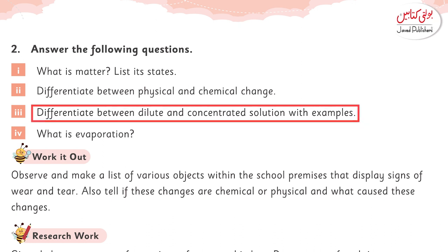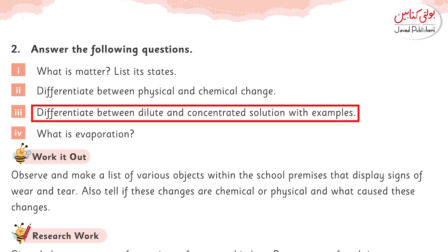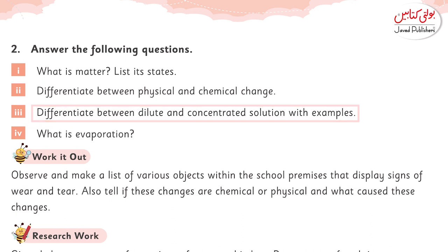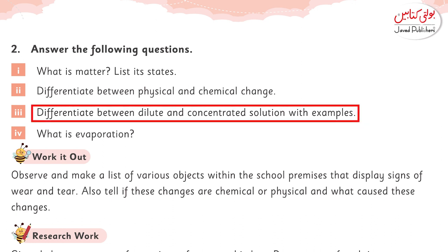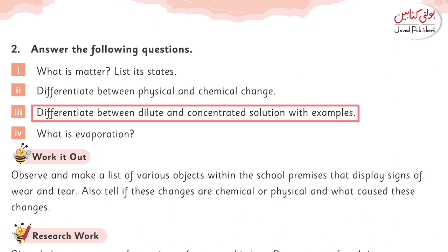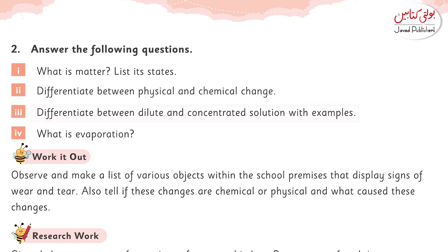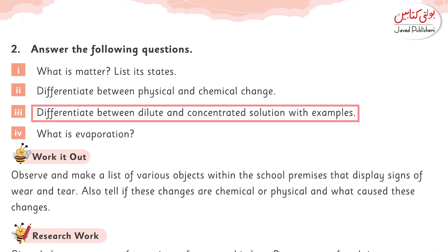Differentiate between dilute and concentrated solution with the help of examples. A concentrated solution is a strong solution that has a larger amount of dissolved solute. On the other hand, a dilute solution is one that has a small amount of dissolved solute. A concentrated solution is called a strong solution, while a dilute solution is called a weak solution.